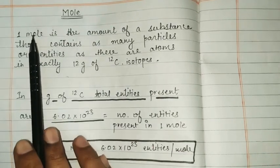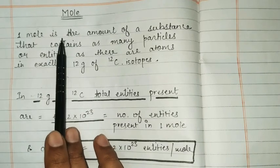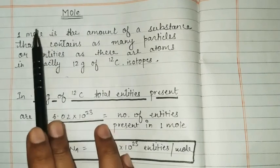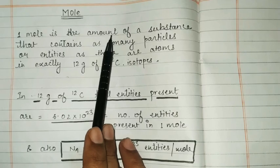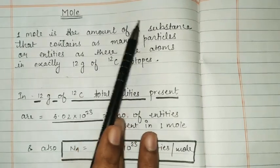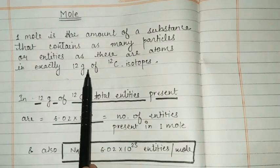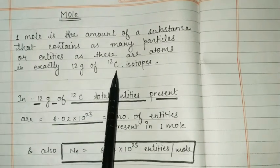And if we talk about the definition, one mole is the amount - like one dozen is the amount that contains 12 things. Same as it is, one mole is the amount of a substance that contains the number of particles that are present in 12 grams of carbon-12 isotope.